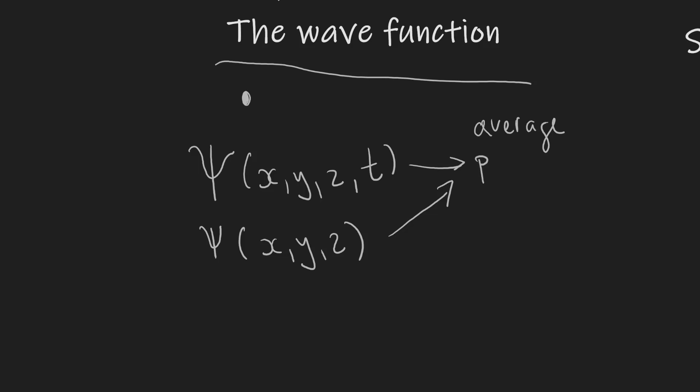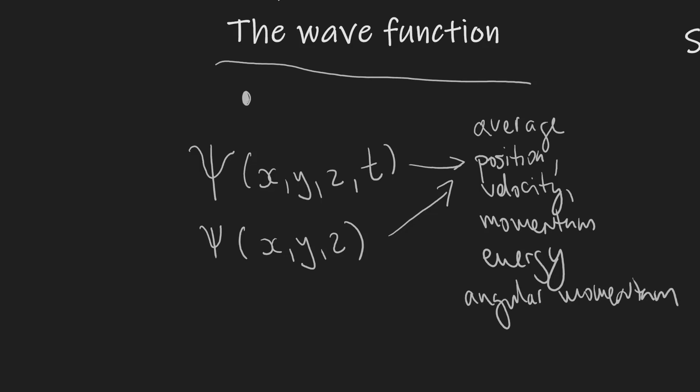For instance we could work out the average position, we could work out the average velocity, we could work out the average momentum, energy or angular momentum. Notice that I'm saying the word average because this distribution will be key in quantum mechanics.